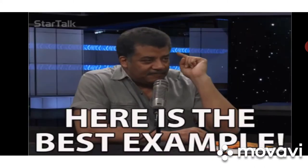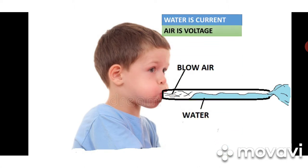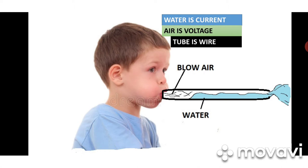I will give a basic example so you will understand very easily. Imagine this is a tube. Inside the tube there is some water, and when we blow air from one side of the tube, the water splashes out the other side. Water represents current, what you blow is called voltage, and the tube is your cable or wire.